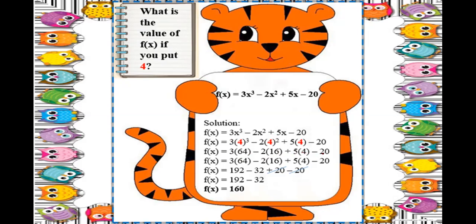Now: 3 times 64 is 192 — positive. Negative 2 times positive 16 is negative 32. Positive 5 times positive 4 is positive 20. Then copy the minus 20 at the end. Notice that positive 20 and negative 20 cancel each other out — 20 minus 20 is 0.